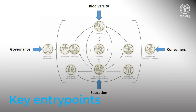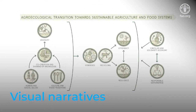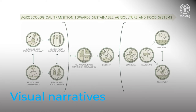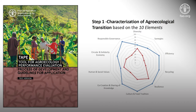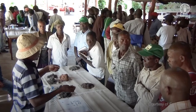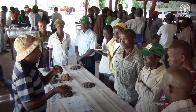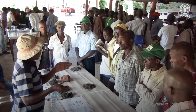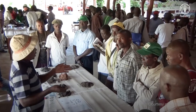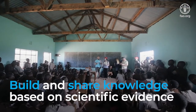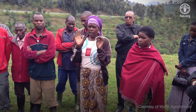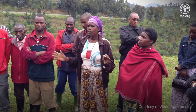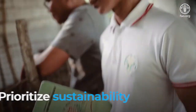The 10 elements are a useful analytical tool to facilitate decision-making by practitioners and other stakeholders when planning, managing and evaluating agroecological transitions. To derive maximum benefit from these elements, we must continue to learn and innovate together, build and share knowledge based on scientific evidence and experience from the field, and support policies, procedures and legislation that prioritise sustainability.